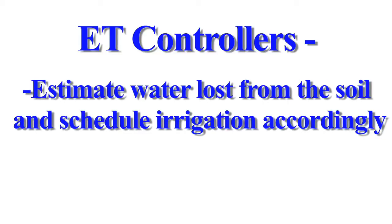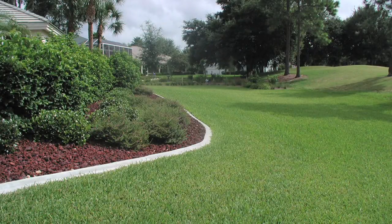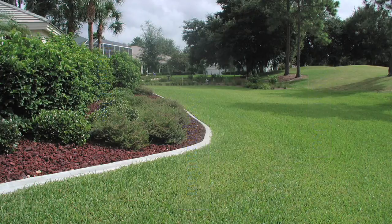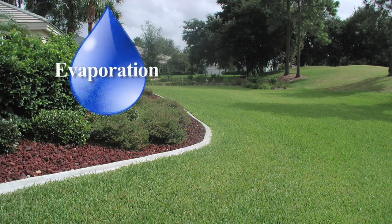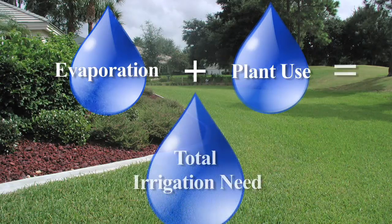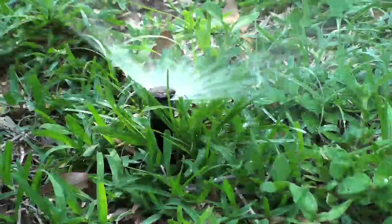Evapotranspiration irrigation controllers attempt to estimate or measure the loss of water in the root zone of the representative plant. For example, let us say that yesterday was a really hot day outside with a strong breeze blowing. Our soil is going to be losing a lot of water both due to evaporation and our plants. The ET irrigation controller will measure these weather conditions, estimate how much water was lost from the soil yesterday, and replace the amount that was lost by determining an irrigation system run time. Once the irrigation time rolls around, the soil is replenished and the process starts again for the next day.